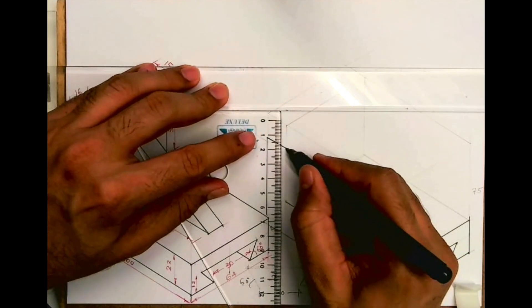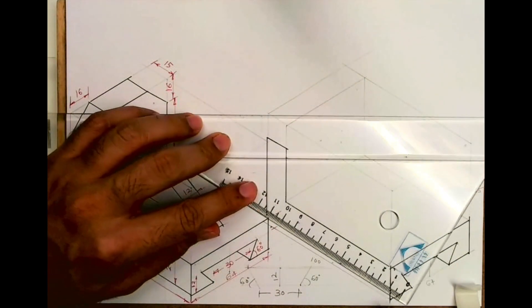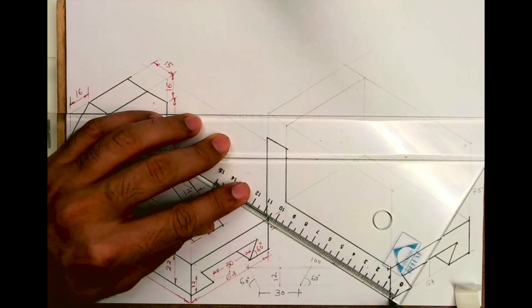And you join this. Ignore that overlapping part. So we are done with this L-shape.